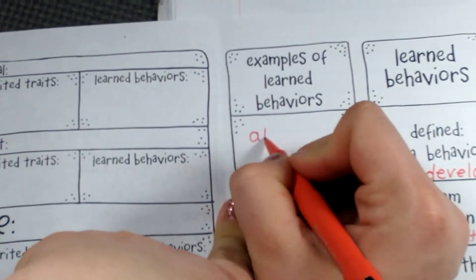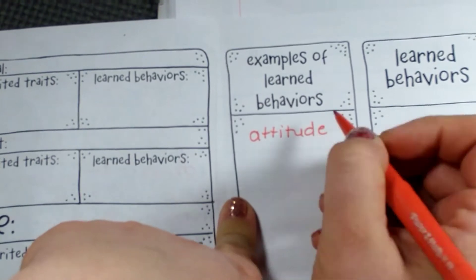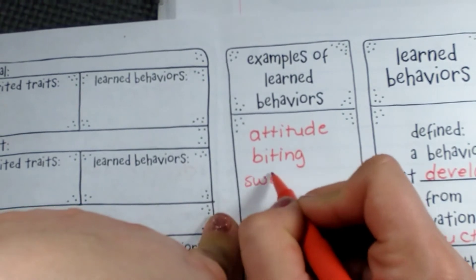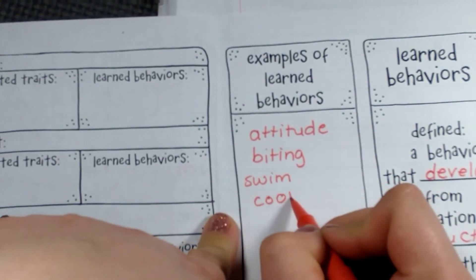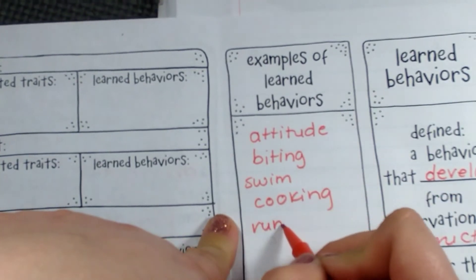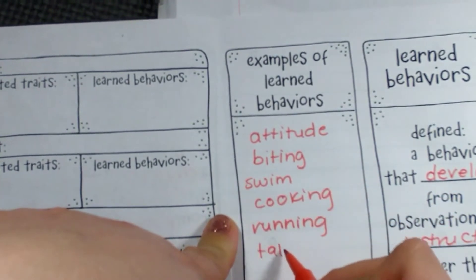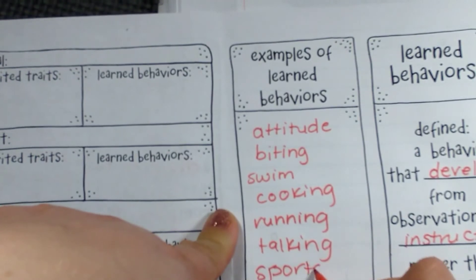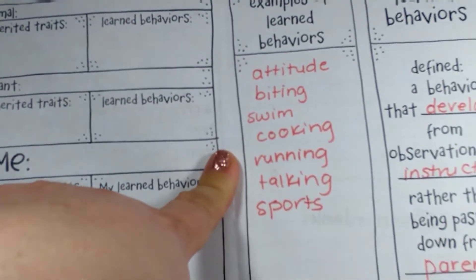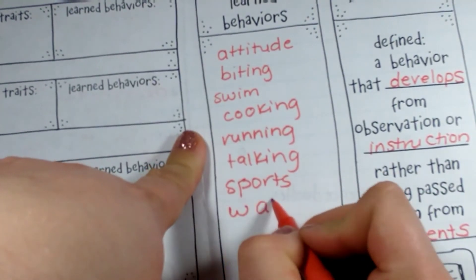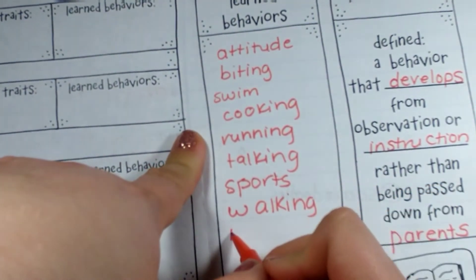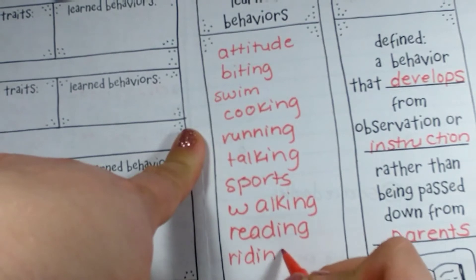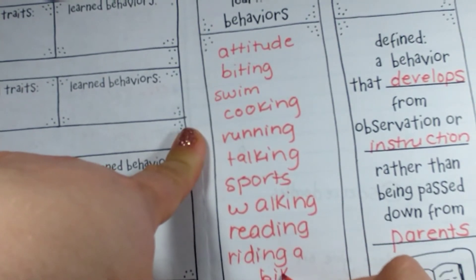Some examples of learned behaviors might be having an attitude about something, biting, swimming, cooking, running, talking, any sport. Some people have natural abilities for sports, but they still have to learn how to do it. Walking, reading, riding a bike — anything that you learn how to do or need to practice is a learned behavior.